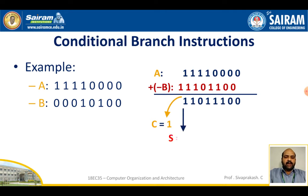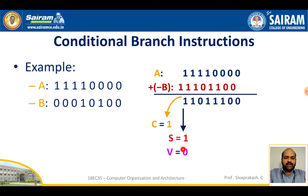The sign bit is set to 1 because the most significant bit of the result is 1, indicating a negative number. The overflow flag is not set, so V = 0, as no overflow is produced.